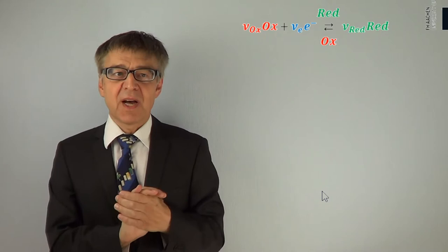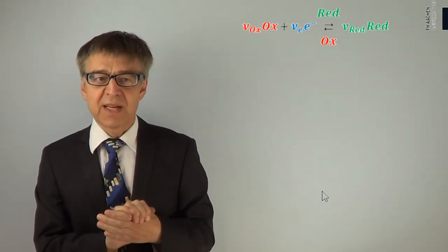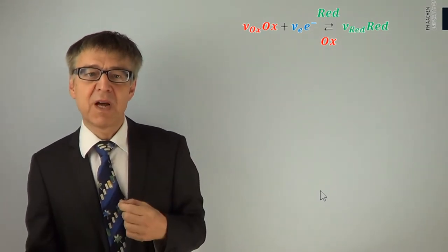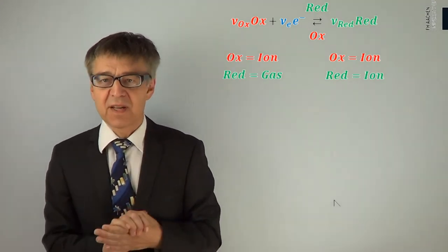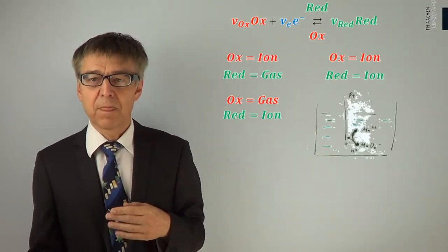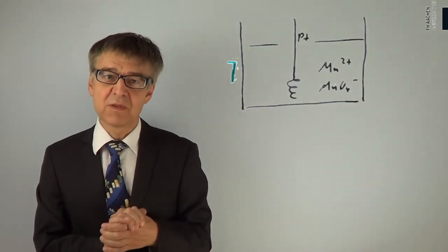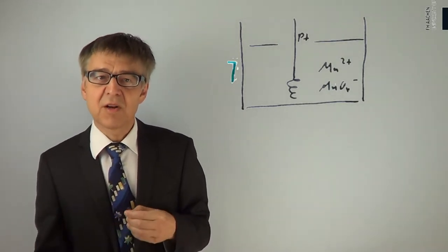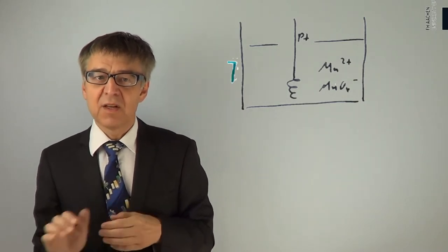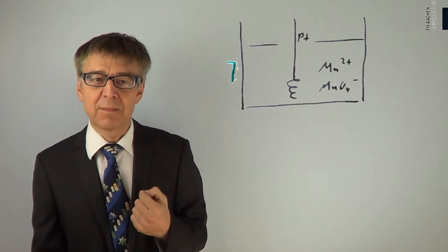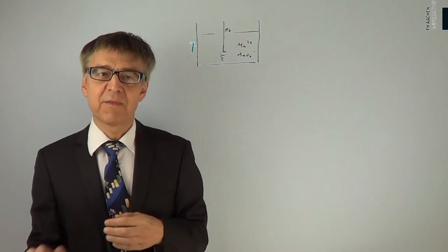Depending on the chemical nature of the oxidized and reduced species, we distinguish between several types of electrodes: metal electrodes, reference electrodes, non-metal electrodes, and redox electrodes. In a redox electrode, both the oxidized and reduced form are dissolved in the electrolyte. We also need an inert electronic conductor to measure the electron push or pull of the redox couple. The Fe²⁺/Fe³⁺ electrode is an example of such an electrode.